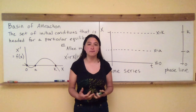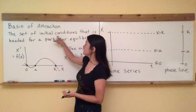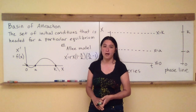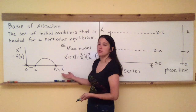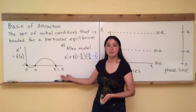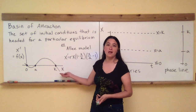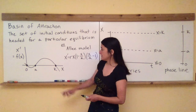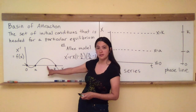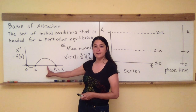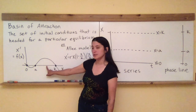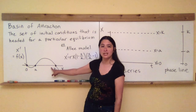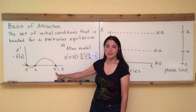For basins of attraction, I want to talk about initial conditions — values we start with other than the equilibrium values. This graph tells us that if we start anywhere else on the horizontal axis, it tells us which direction we're going to move. For example, if we start with an initial condition between a and k, the derivative x prime is positive there, so we're going to increase in x and move to the right until we get stuck at the equilibrium point k.